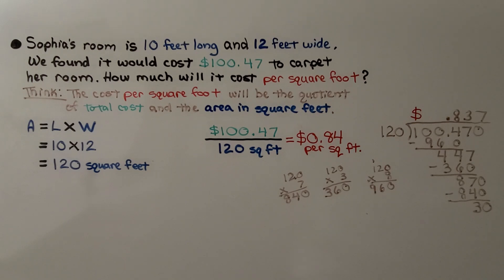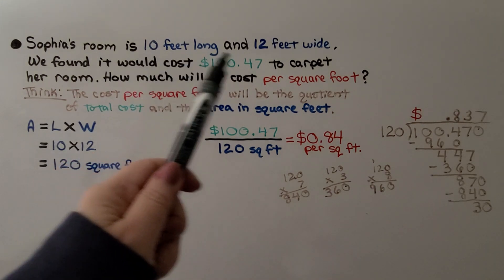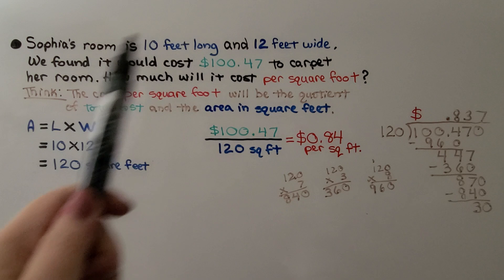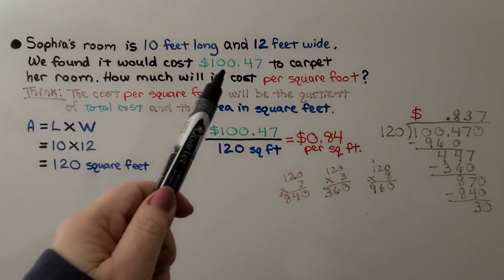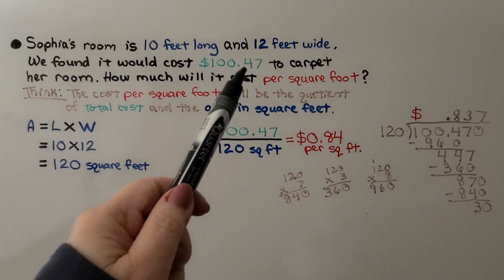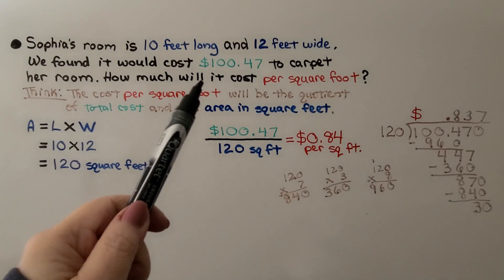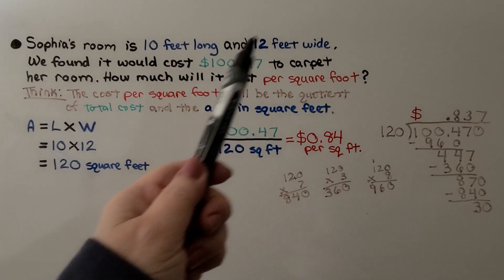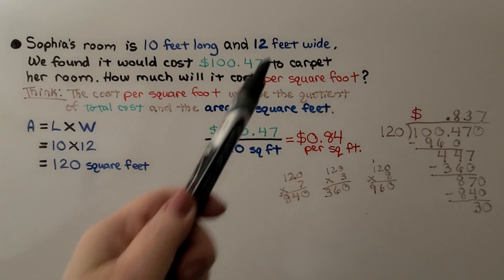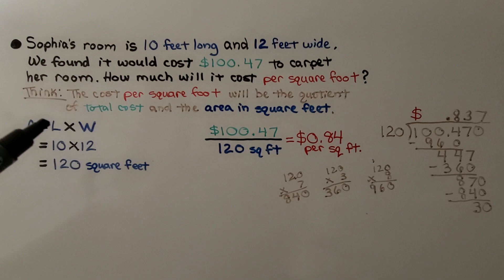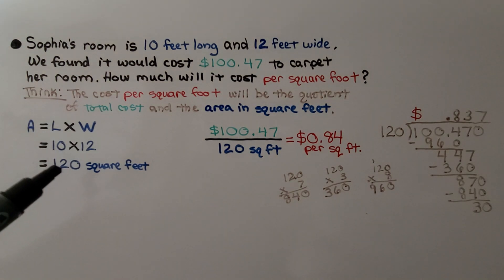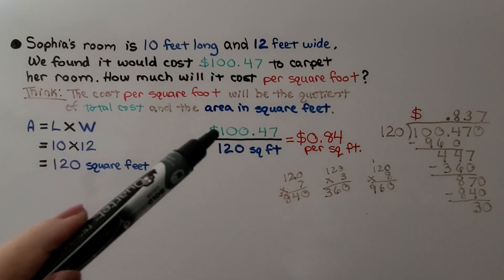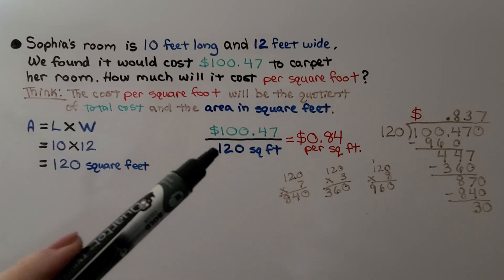At the beginning of the problem, we saw that Sophia's room was 10 feet long and 12 feet wide. And we just found it would cost $100.47 to carpet her room. How much will it cost per square foot? Now we can use the original amounts, the 10 feet and 12 feet. And we do length times width. 10 times 12 is 120 square feet. We take the total cost and divide it by that 120.